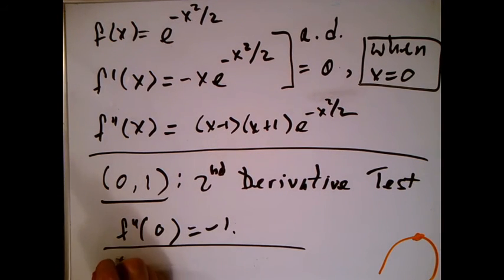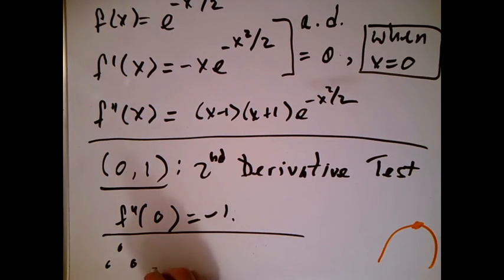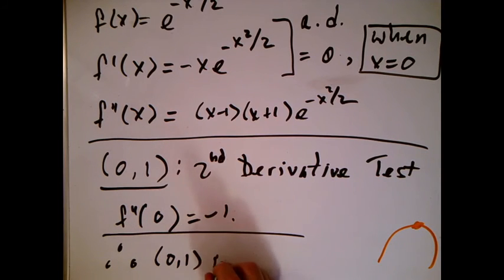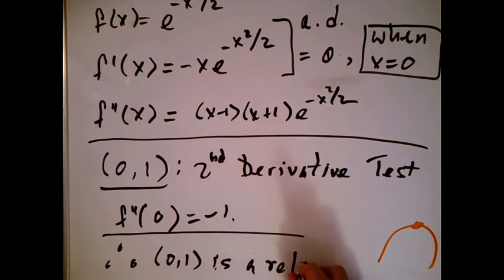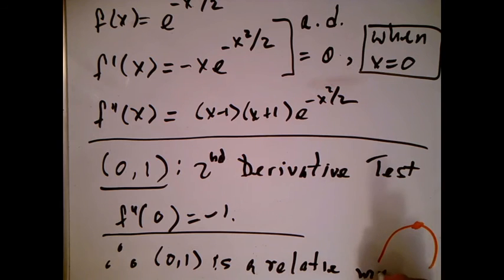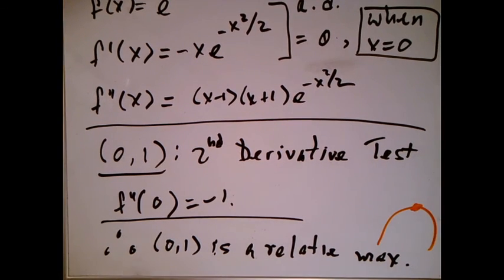So a little conclusion down here, put a little three little dots for tada, or whatever you want to stand for. Point (0,1) is a relative maximum, relative max, like that. Can we see that? Yeah, we can.